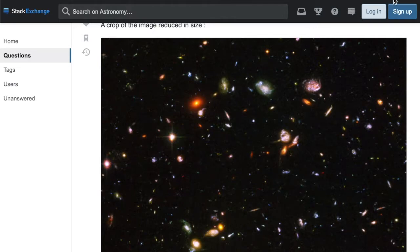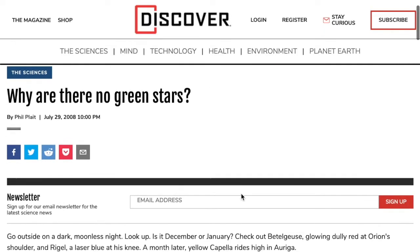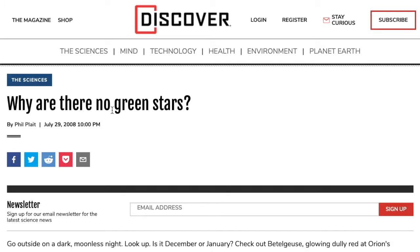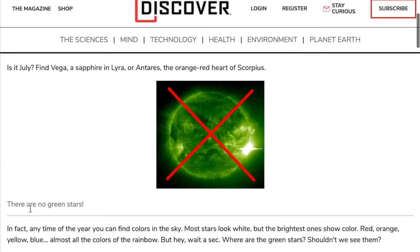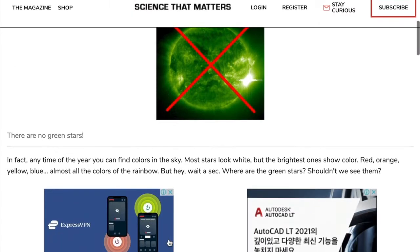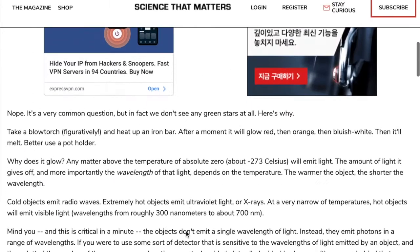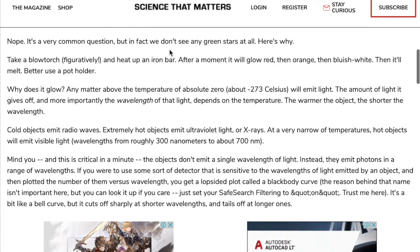Now, what's interesting about this, is according to this website, there are no green stars. Why are there no green stars? In fact, any time of the year you can find colors in the sky. Most stars look white, but the brightest ones show color. Red, orange, yellow, blue, almost all the colors of the rainbow. But hey, wait a sec. Where are the green stars? Shouldn't we see them? Nope, it's a common question. But in fact, we don't see any green stars at all.